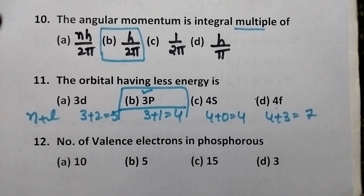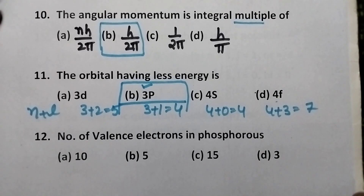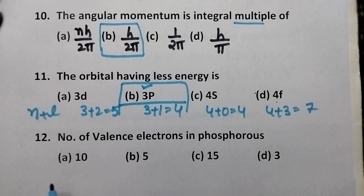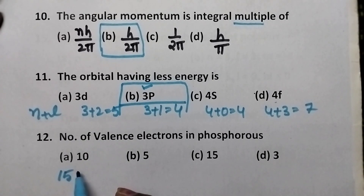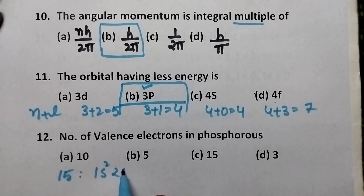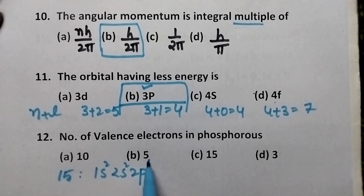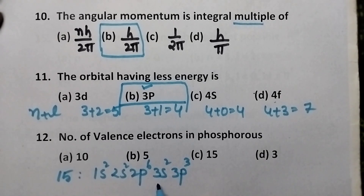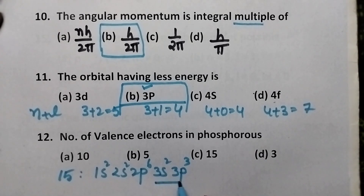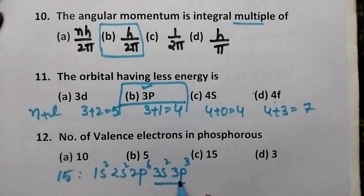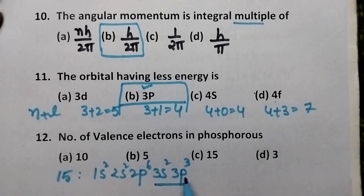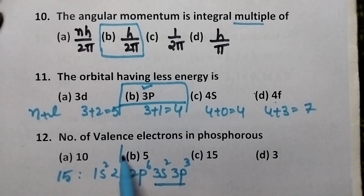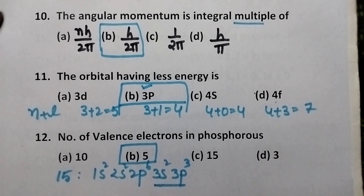Number of valence electrons present in phosphorus — phosphorus atomic number is 15 and hence its configuration is 1s2, 2s2, 2p6, 3s2, 3p3. So in the outermost orbit, the number of valence electrons present is 5. So option B is the right answer.